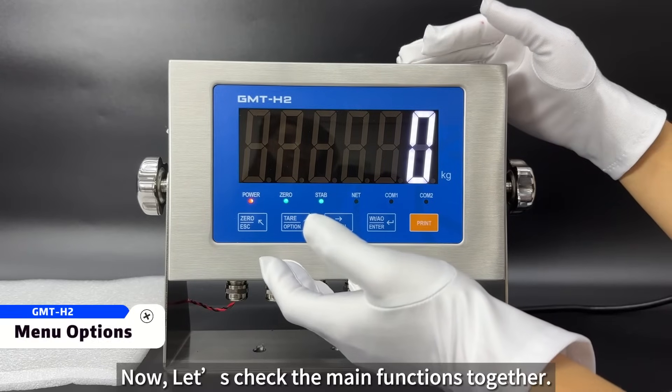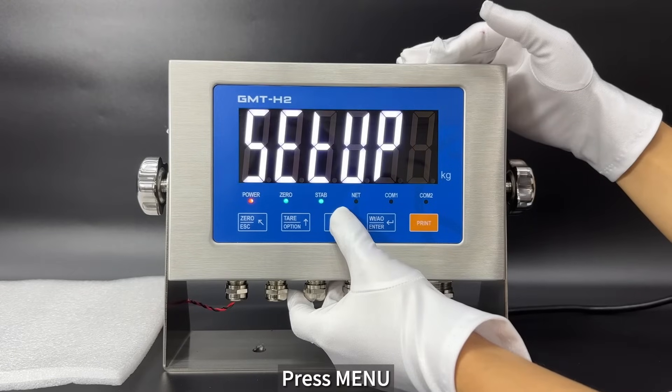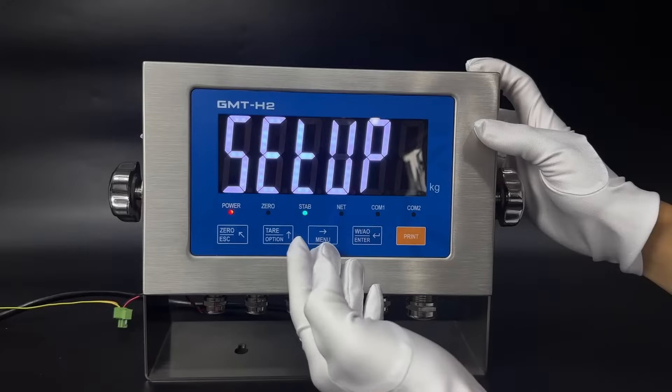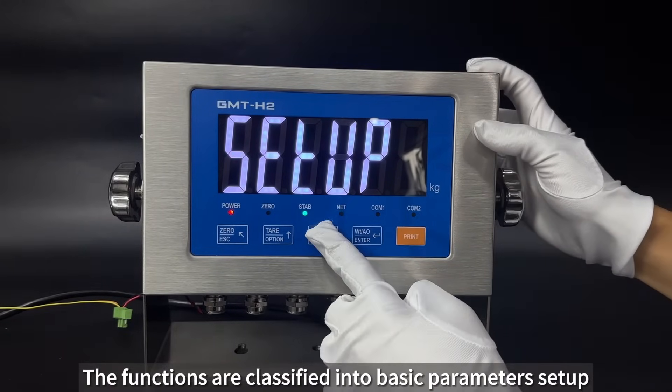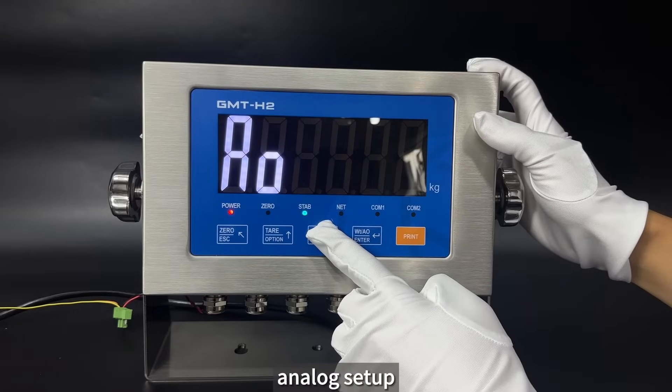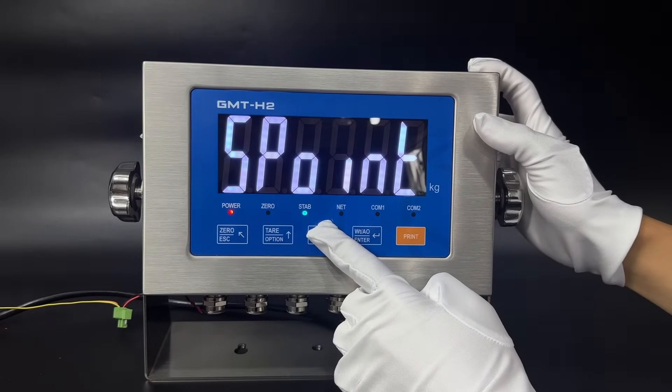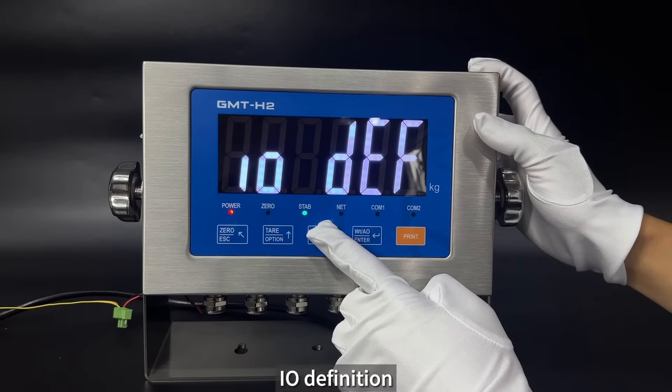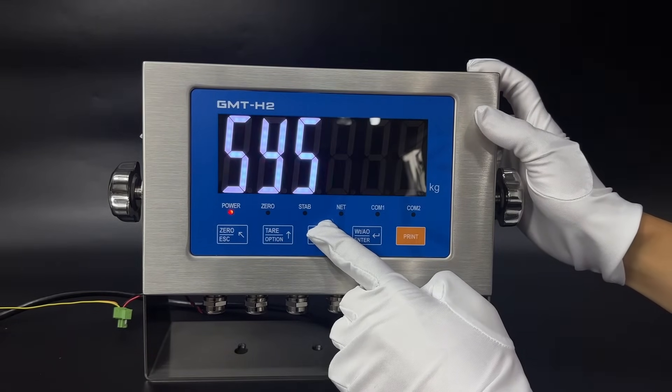Now let us check the main functions together. The functions are classified into Basic Parameters Setup, Calibration, Analog Setup, Communication Parameters, Setpoint, I-O Definition, I-O Test, and System Parameters.